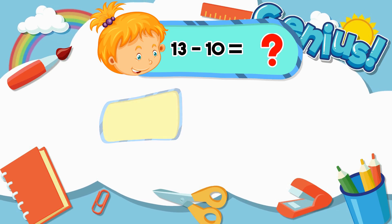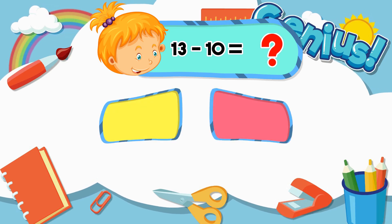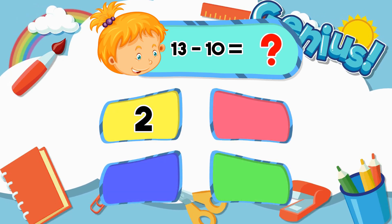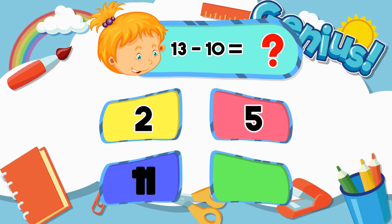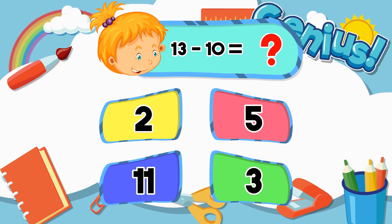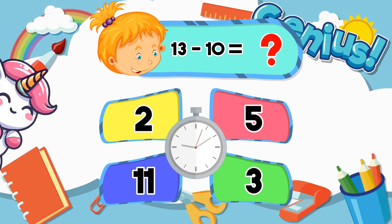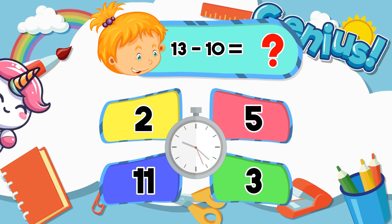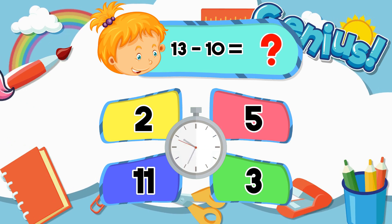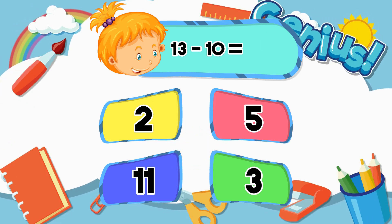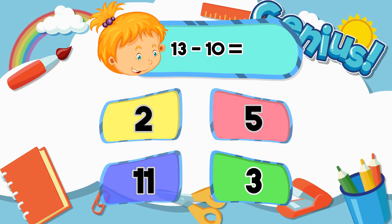What is 13 minus 10? 2, 5, 11, 3. Answer: 3.